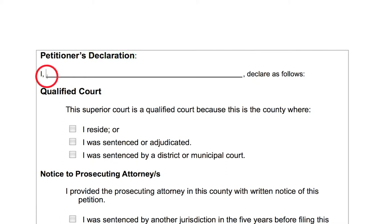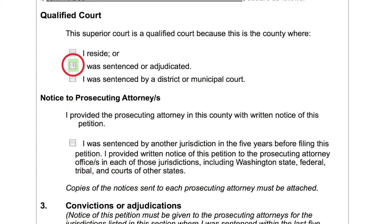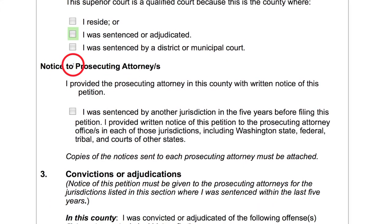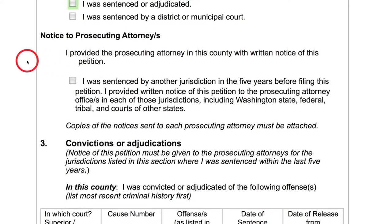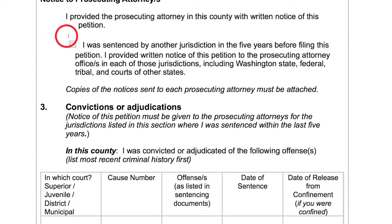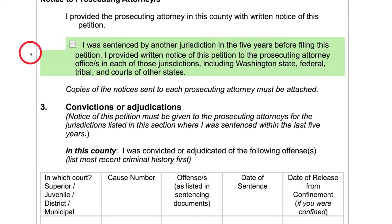The next page is the declaration. You'll enter your name first and then specify why you selected the court that you did. You chose your court either because it's the county where you reside, the county where you were sentenced or adjudicated, or it's the county where you were sentenced by a district or municipal court. For example, if you were convicted in Seattle Municipal Court, you would file your application in King County Superior Court. The next statement says you provided the prosecuting attorney in this county with written notice of your petition. You haven't done that yet, but you'll do it on the same day you file. If you have a conviction from any other jurisdiction, you will have to notify other prosecutors as well. We'll talk about how to do that later. For now, go ahead and check the box.